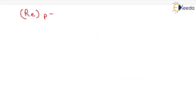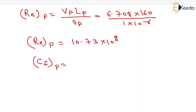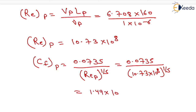Reynolds number for prototype equals velocity of prototype into length of prototype upon kinematic viscosity of prototype, giving 6.708 into 160 divided by 1 into 10 to the power minus 6, which equals 10.73 into 10 to the power 8. Therefore Cf for prototype equals 0.0735 divided by (10.73 into 10 to the power 8) to the power 1 by 5, giving 1.49 into 10 to the power minus 3.